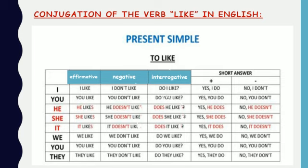In the question form, the auxiliary comes first, then the subject, then the verb in its infinitive form. The auxiliary is conjugated differently here: do I like, do you like, does he like, does she like, does it like, do we like, do you like, do they like. Again, the changes only appear in he, she, and it.